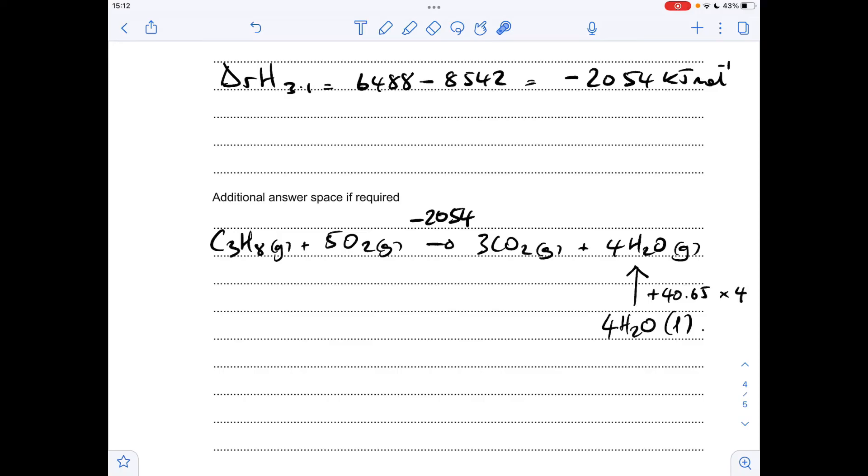But the problem we've got is, think about this as a continuous process, we're going there, we want to go down to the liquid form of the H2O. So effectively, we need to subtract this, and that will effectively flip the arrow round into the direction we want it to go.